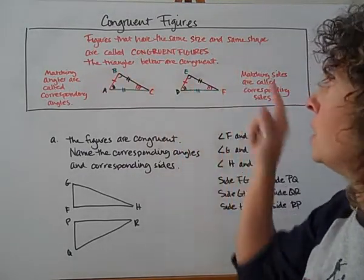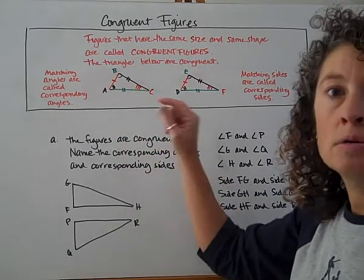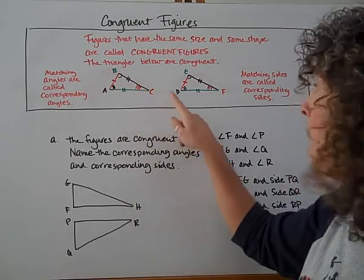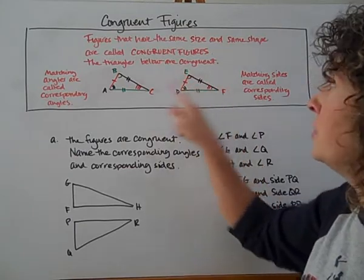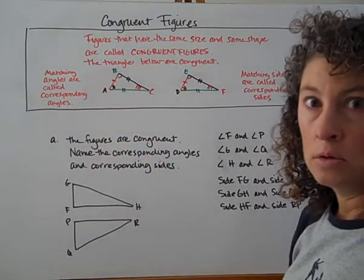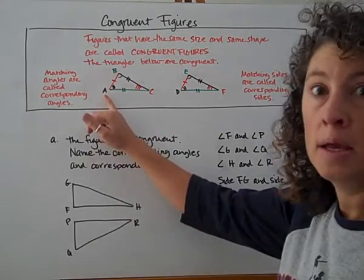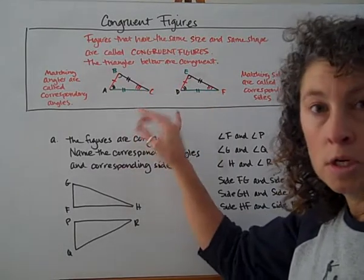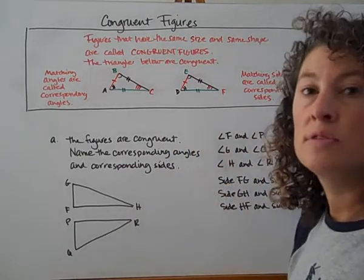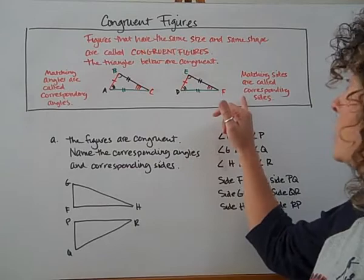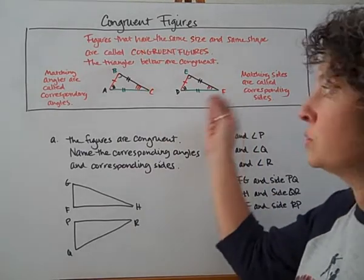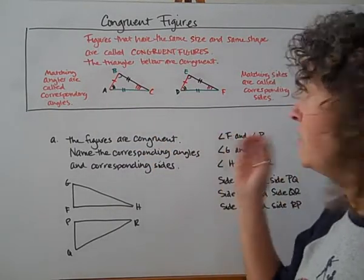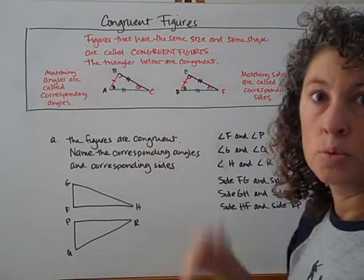The triangles below are congruent. We name triangles by their corners, by their angles. So we look at triangle ABC and compare that to triangle DEF. Matching angles are called corresponding angles — they correspond to each other. Angle A corresponds to angle D, and those angles are congruent, meaning they have the same degree measure. We can also talk about matching sides, called corresponding sides. For congruent figures, corresponding sides are also congruent and have the same length. We measure sides with length and angles with degrees.